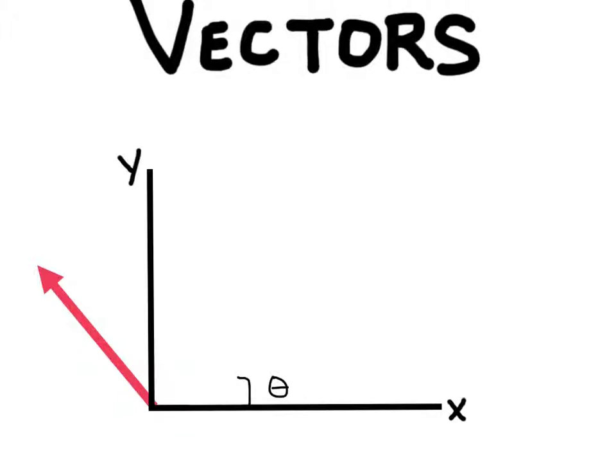Now with vectors we have a couple parts of the vector here. We have the tail which is down here and then we have the head or the tip of the vector.